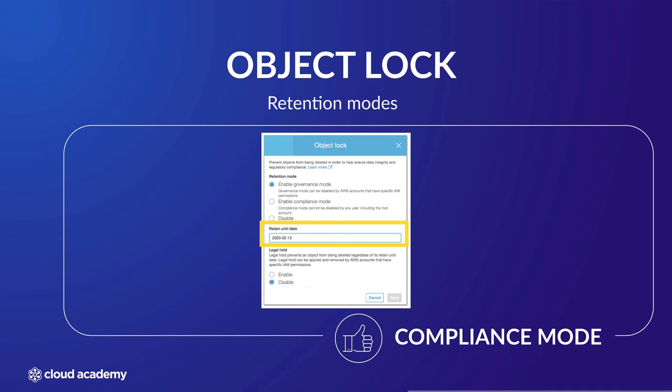You can also set object lock on a per-object basis if you didn't want to set a default retention mode of governance or compliance. To do so, you need to select the object lock option of the object properties itself. When doing so, you will see the following screen. Again, you can set either the governance or compliance retention mode for that specific object. The retain until date shows that this object is already bound by a retention mode with a retention period, showing the date until which this object is protected. When this date has passed, the object is no longer protected and can be deleted.